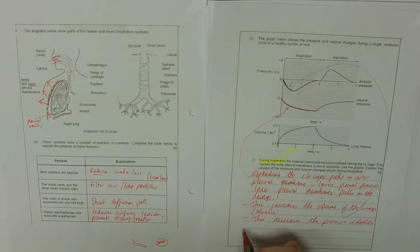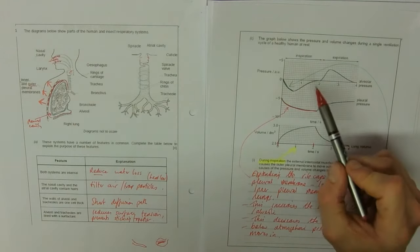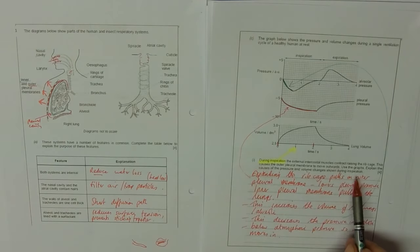This decreases the pressure in the alveoli, and why does air move in? Pressure and volume changes. So this is below atmospheric pressure, so air moves in. Or you could have said the negative pressure, so air will move. That's actually why this top alveoli pressure then goes up. So we've explained the causes of the pressure and volume changes shown, only during inspiration. Quite a tricky four marks those.